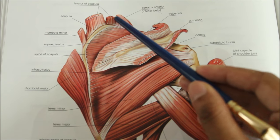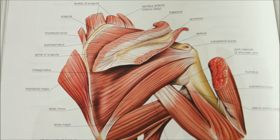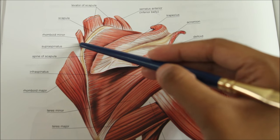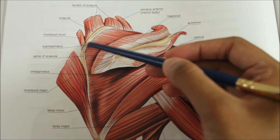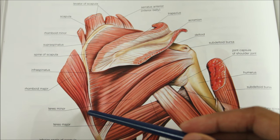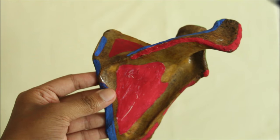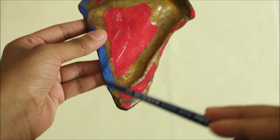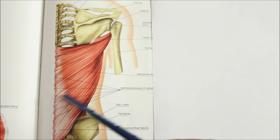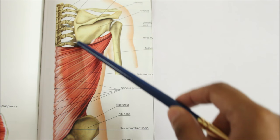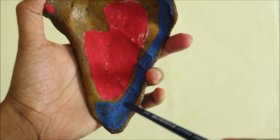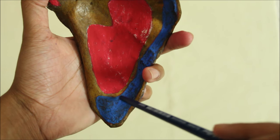The levator scapulae is inserted along the dorsal aspect of the medial border from the superior angle to the root of the spine. The rhomboid minor is inserted into the medial border at the root of the spine. The superior angle is covered by the trapezius. The inferior angle on its dorsal aspect gives origin to the latissimus dorsi. The inferior angle on its costal aspect gives insertion to the five digitations of the serratus anterior.